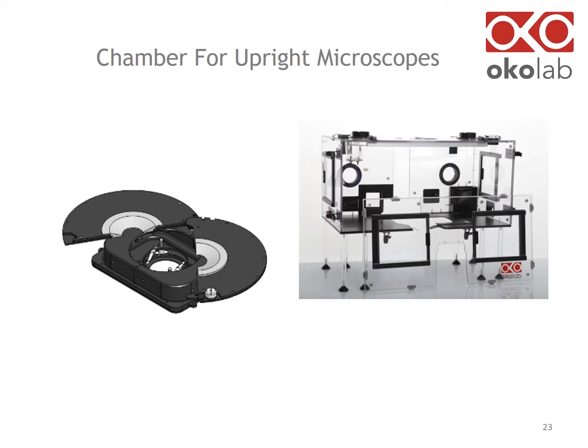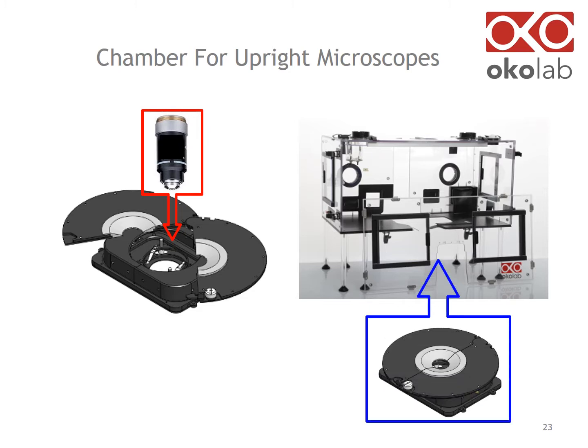If you are using an upright microscope, the chamber lid has an opening allowing the insertion of the objective. This opening is a route for evaporation of the media. For this reason, an upright microscope requires an active humidity system.